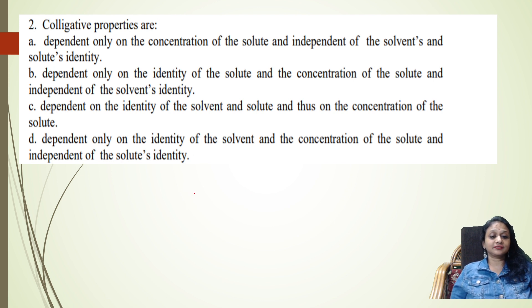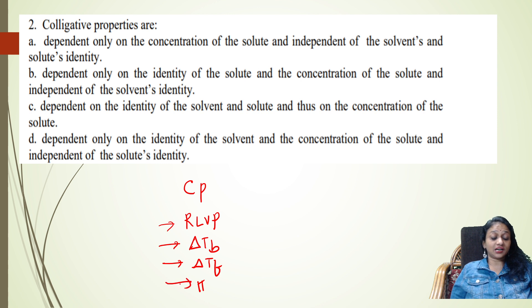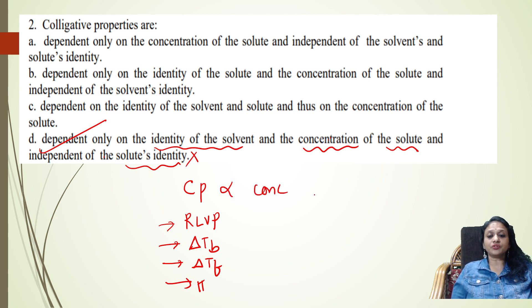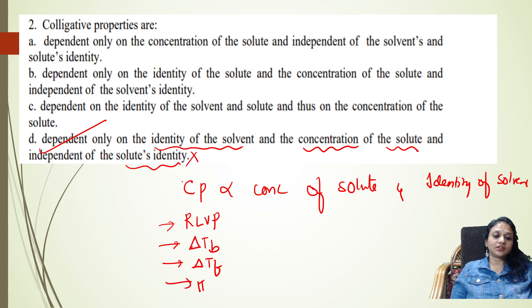Question 2: Colligative properties are what? Colligative properties — relative lowering of vapor pressure, elevation in boiling point, depression in freezing point, and osmotic pressure — depend only on the identity of the solvent and the concentration of the solute, never on the identity of the solute. We concentrate only on the number of moles. So option D is correct: depends on the identity of the solvent and concentration of the solute.